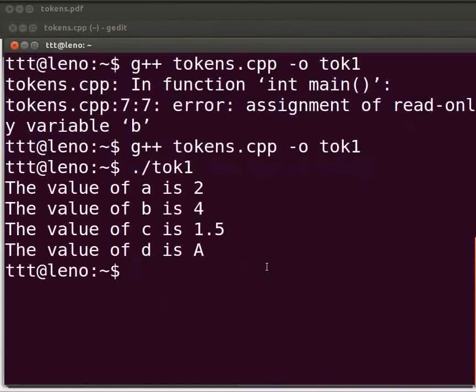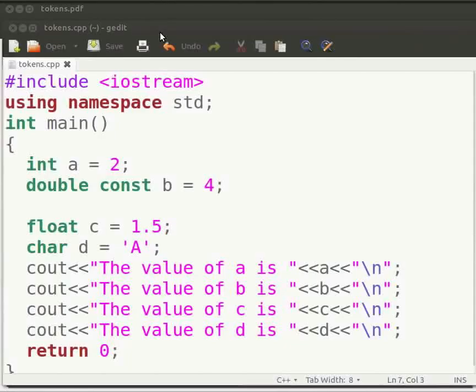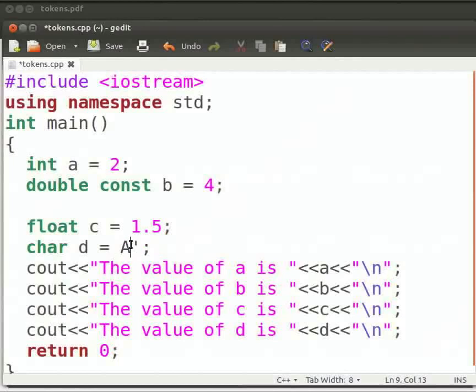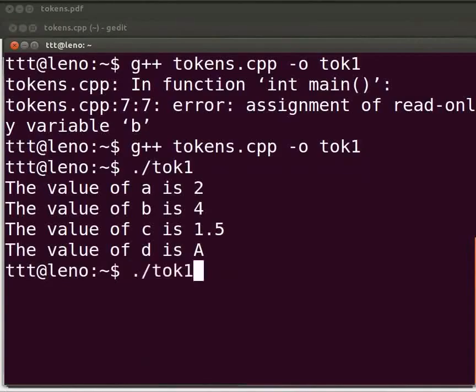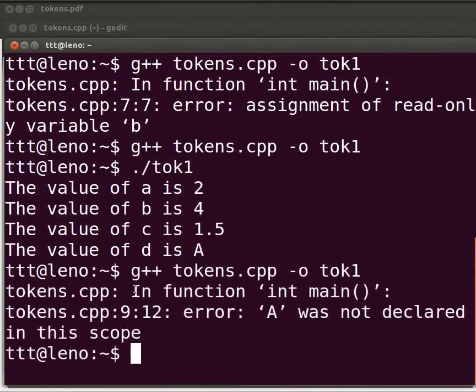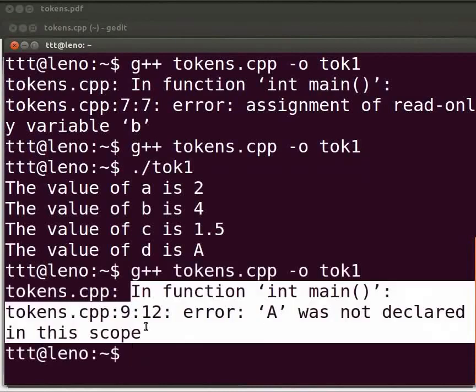Now we will see another common error. Switch back to our program. Suppose here I will miss the single quotes. Click on save. Let us execute. Come back to our terminal. Compile as before. We see an error at line number 9 in our tokens.cpp file. A was not declared in this scope.